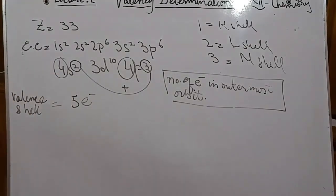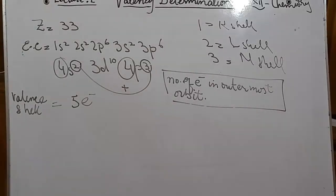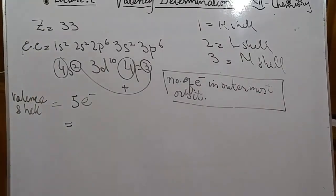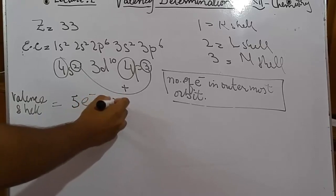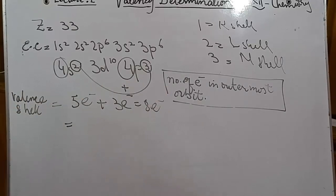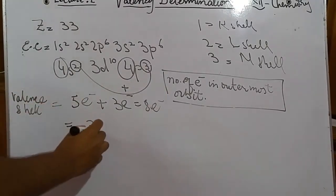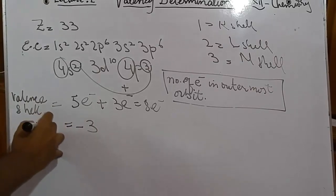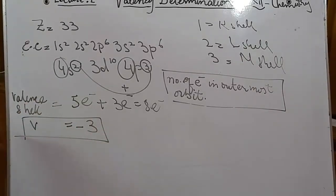Adding the electrons in the outermost orbit (shell 4): 4p³ + 4s² = 3 + 2 = 5 valence electrons for atomic number 33. According to the theory, if an element has five, six, or seven electrons in its outermost orbit, it will always gain electrons. It needs 3 more electrons to complete its octet (5 + 3 = 8). So the valency is −3, using the negative sign because it gains electrons.